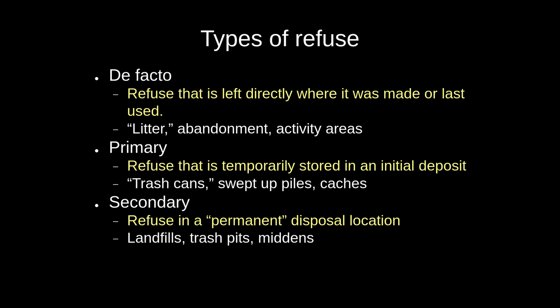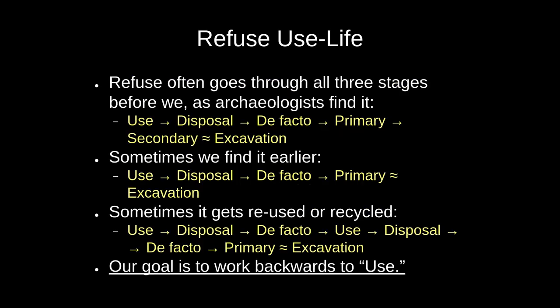Secondary contexts are permanent disposal locations. When we take our trash cans out to the bin by the street, into the trash truck, and into the landfill, the landfill is the secondary final resting place. There may be multiple primary locations before you reach that secondary disposal location. These three stages form what we call the use life — the refuse use life trajectory. Often refuse goes through all three stages before archaeologists find it.